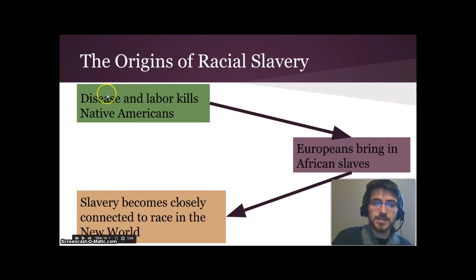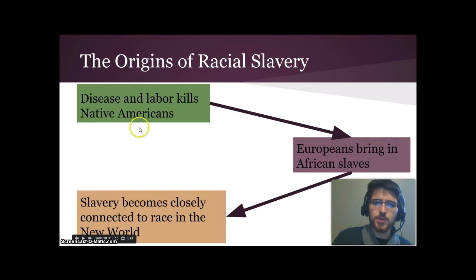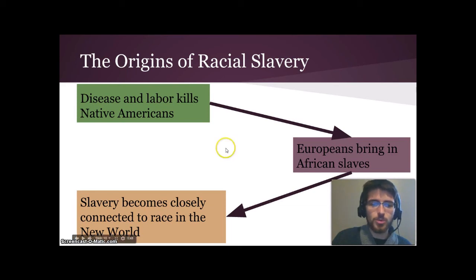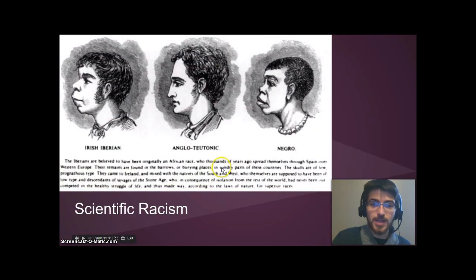Because disease and labor were killing the Native Americans so rapidly, Europeans began to bring in African slaves. Slavery then became closely connected to race in the New World — Native Americans were convenient targets for forced labor, Europeans came as owners and powerful figures, and enslaved Africans were brought in as a unique subclass to be exploited. Europeans came up with many ways to justify this very unfree position, trying to make themselves believe it was the right thing to do, deploying science, religion, and reason to convince themselves this was acceptable.